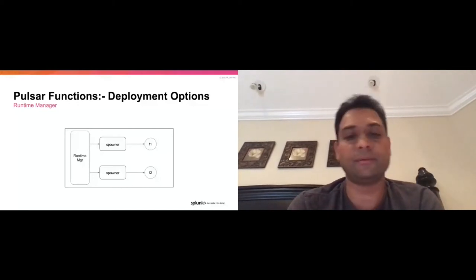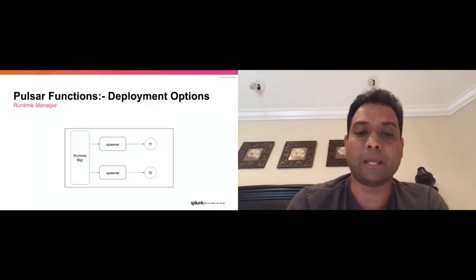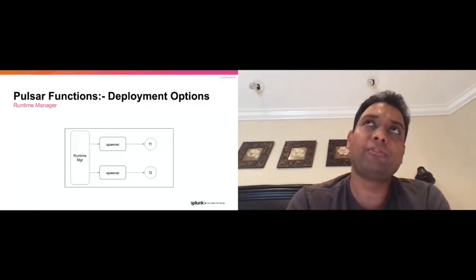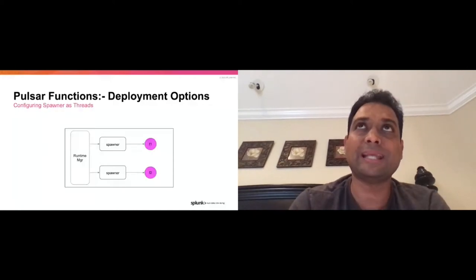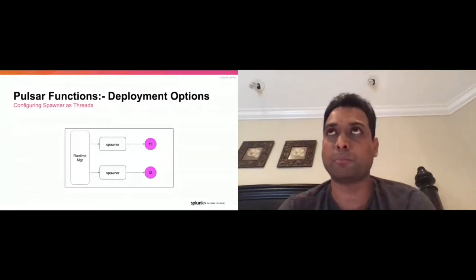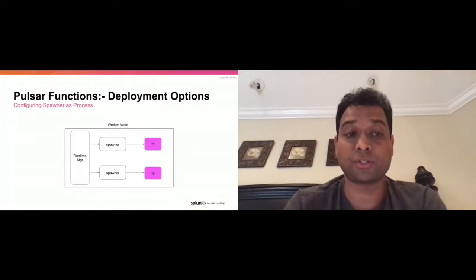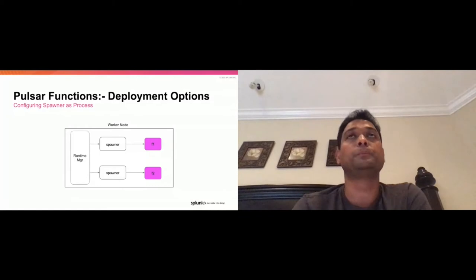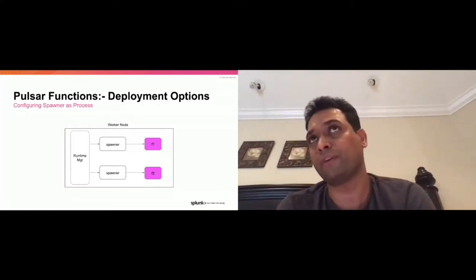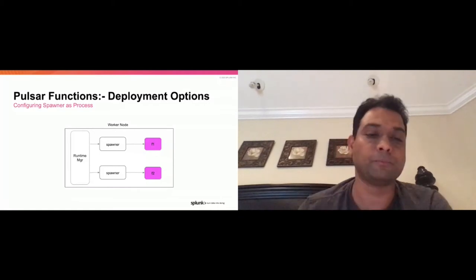By configuring this spawner, we can run these functions in any manner we want. We can think about the spawner spawning threads if you want to run functions as threads, or as processes if you want to run functions as processes. Essentially, at the heart of things, you're configuring something inside the worker node to say: when functions come to you, run them as threads, or run them as processes, or run them as other things like Docker — which we don't support out of the box but can easily be added inside the code.